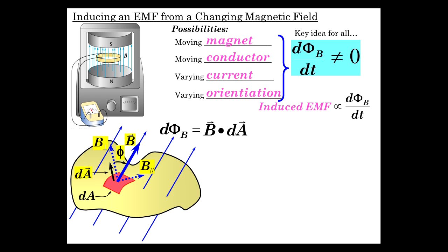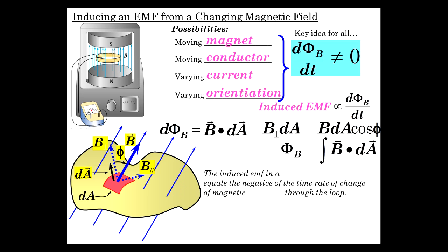So dΦ_B is B dot dA, B perpendicular dA, B dA cosine of φ. Φ is just the integral of all the B dot dA's, go over the whole surface.